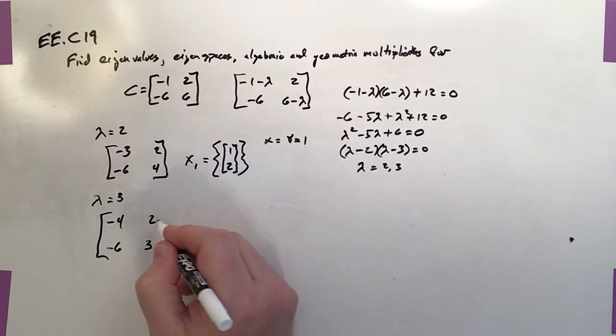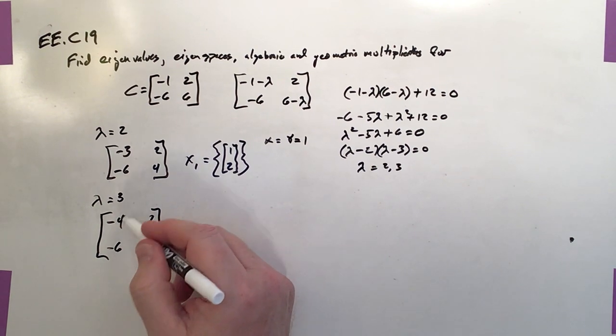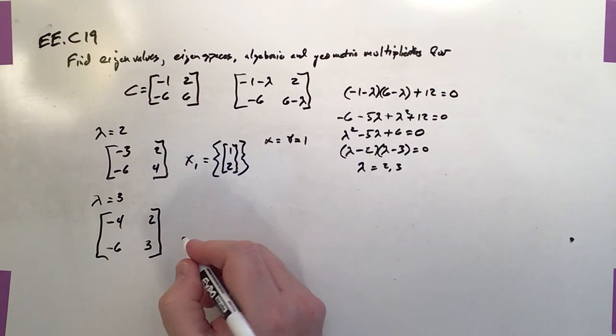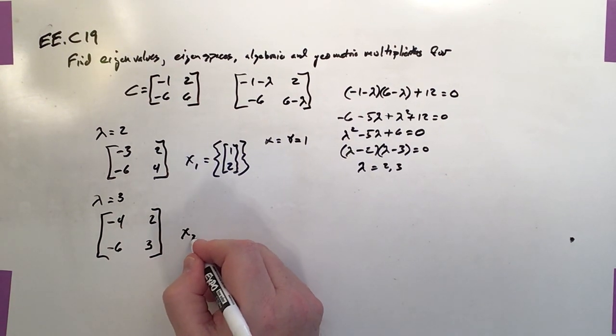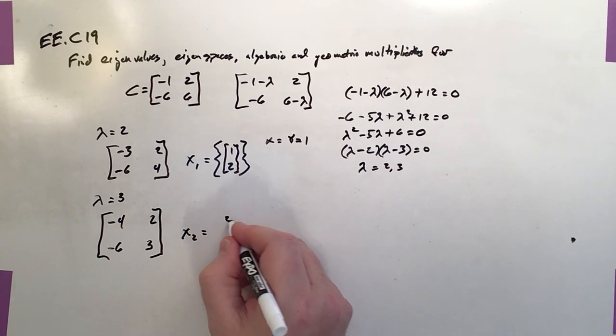And you can see here that things have changed a little bit. Now they're in a 2 to 3 ratio. So that becomes our second eigenvector or eigenspace, is 2 to 3.